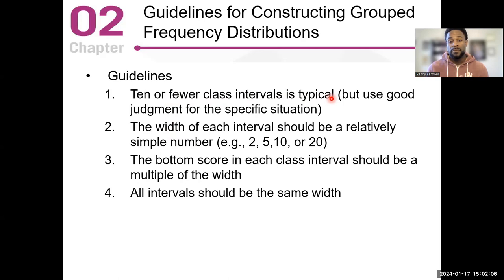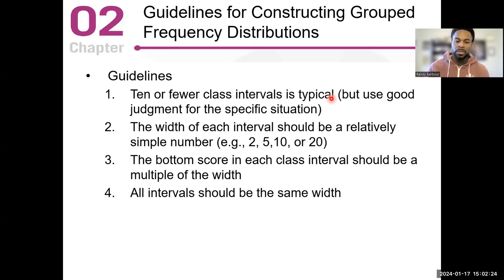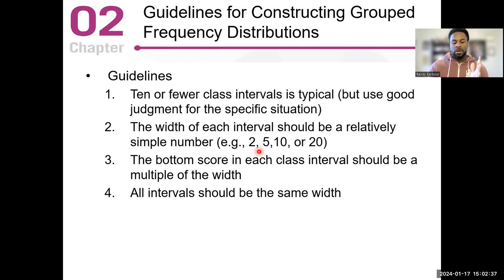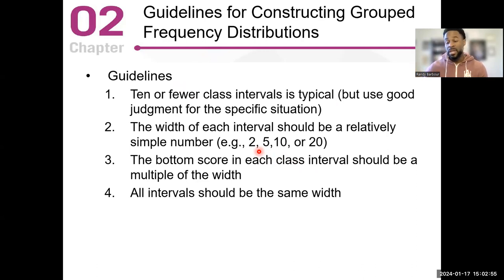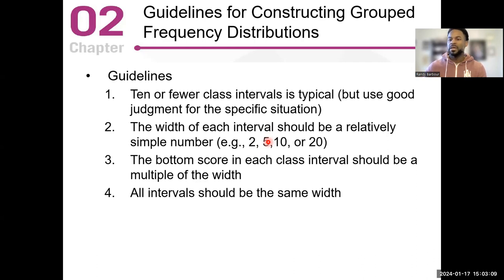Use good judgment for specific situations — you might have more or fewer classes, maybe 15 or 20 classes based on the number of scores in your data. The bottom score in a class should be a multiple of the interval width. So starting at zero to four, with a class of five, your next class starts at five to nine, then 10 to 14, then 15 to 19, then 20 to 24, and so on. Those class numbers start with the even multiples: zero, five, 10, 15, 20.